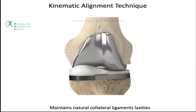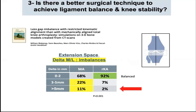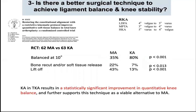When a restricted kinematic alignment protocol was simulated on a thousand CT scans, significantly fewer gap imbalances were encountered compared to mechanical alignment. More than 90% of knees had a mediolateral extension gap difference of less than two millimeters, and more than 90% of knees had a mediolateral flexion gap difference of less than two millimeters.